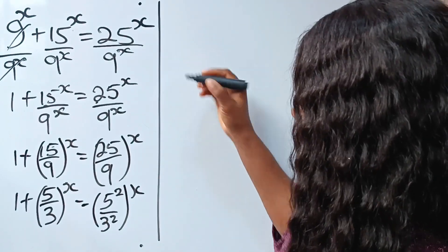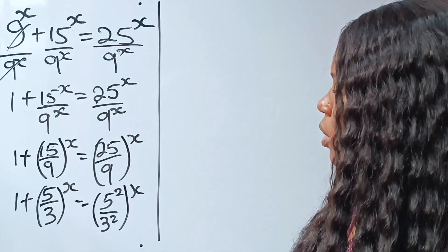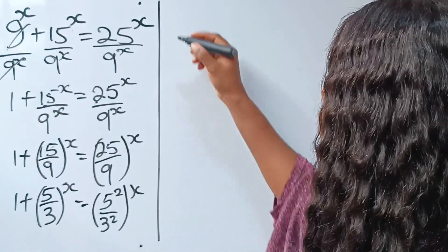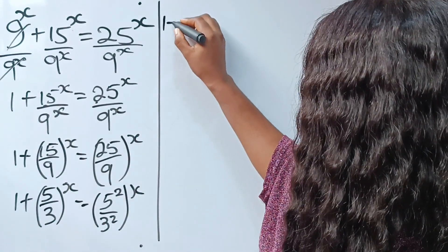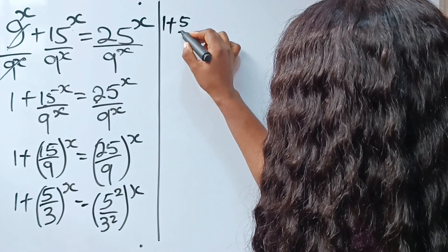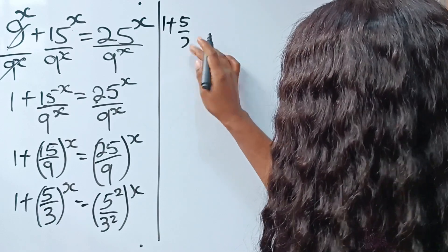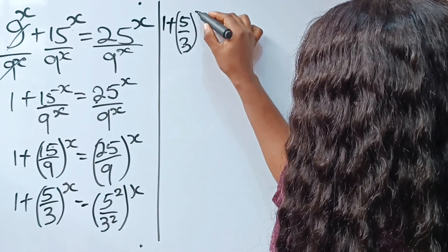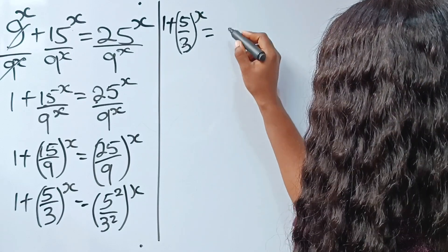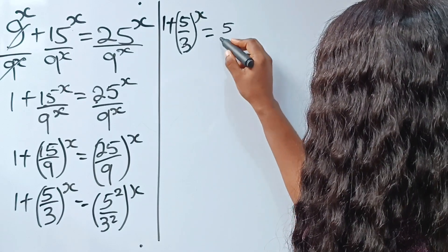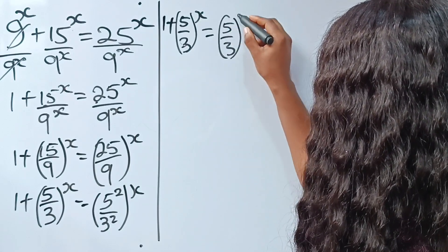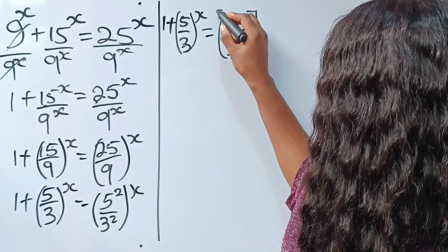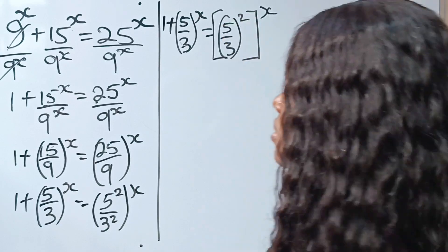At this point, we are going to bring these two out. Let's bring it out. So we have 1 plus 5 over 3 to the power of x, is equal to 5 over 3, everything squared, then raised to the power of x.